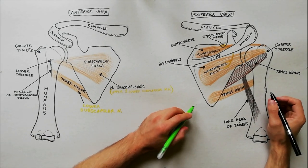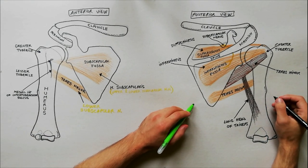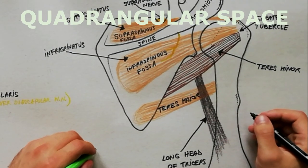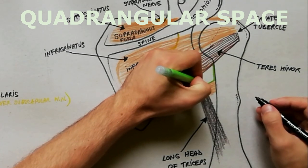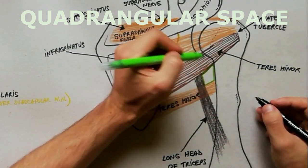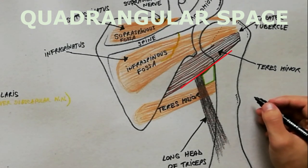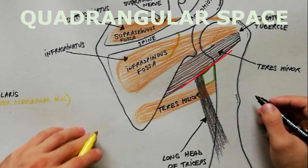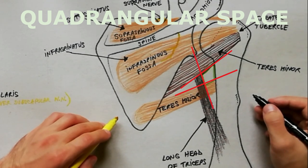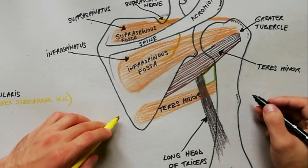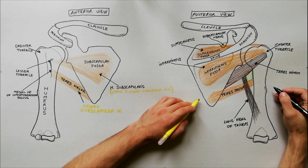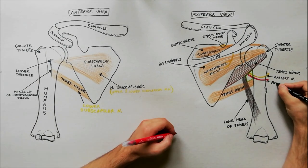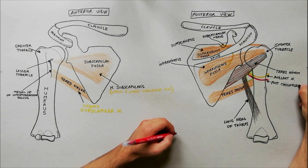We are now in a position to indicate the intermuscular spaces in the scapular region. The first to be indicated is the quadrangular space. Its boundaries are as follows: superiorly is the lower border of teres minor, inferiorly is the teres major, medially is the long head of triceps, and laterally is the surgical neck of humerus. The structures passing through this space are the axillary nerve and the posterior circumflex humeral artery and vein.